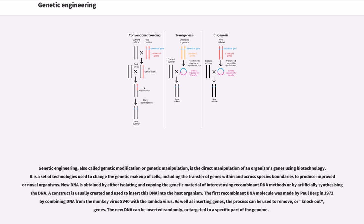Genetic modification, or genetic manipulation, is the direct manipulation of an organism's genes using biotechnology. It is a set of technologies used to change the genetic makeup of cells, including the transfer of genes within and across species boundaries to produce improved or novel organisms. New DNA is obtained by either isolating and copying the genetic material of interest using recombinant DNA methods or by artificially synthesizing DNA. A construct is usually created and used to insert this DNA into the host organism.